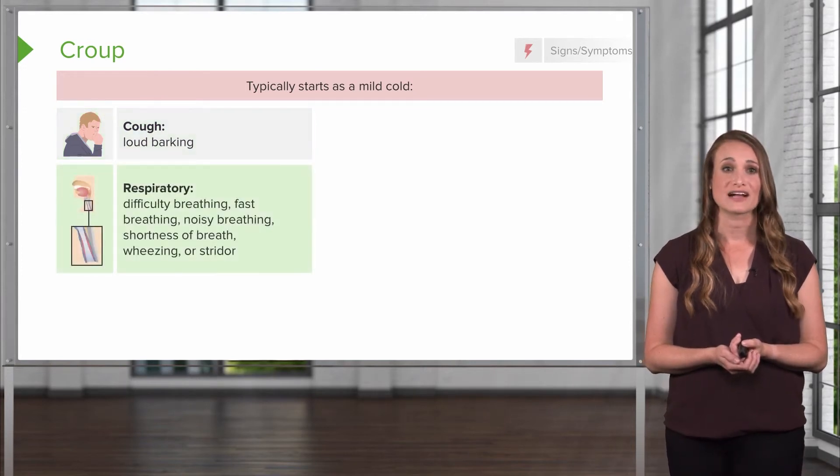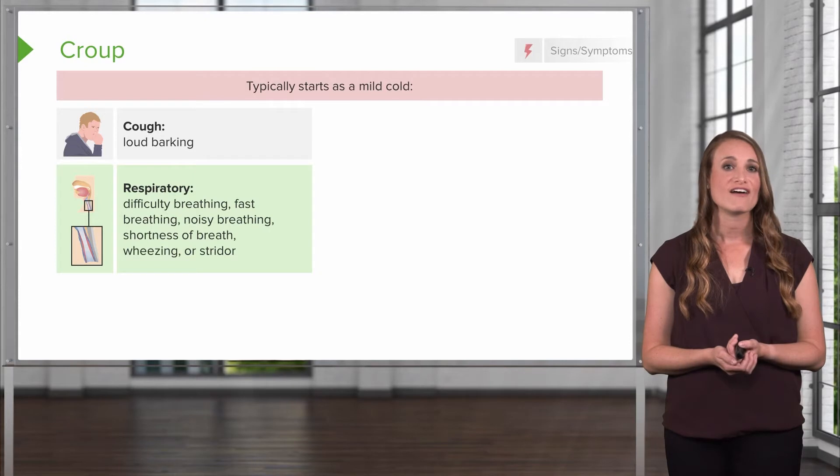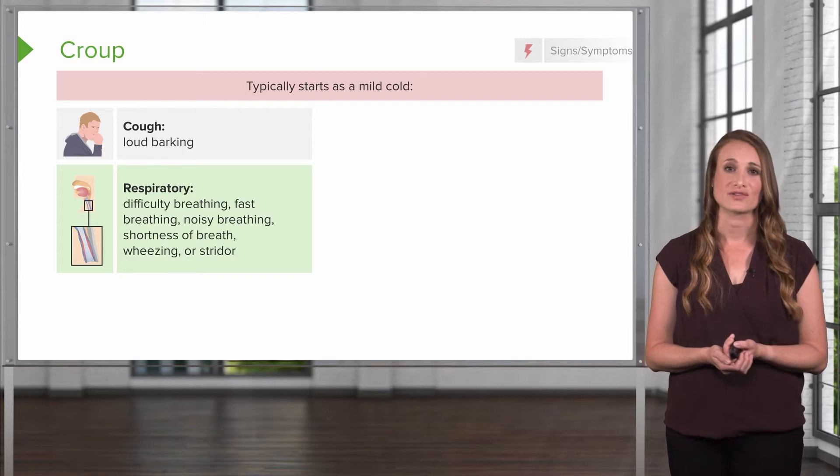Signs and symptoms of the respiratory tract include difficulty breathing, fast breathing or tachypnea, noisy breathing, shortness of breath, wheezing, and stridor.